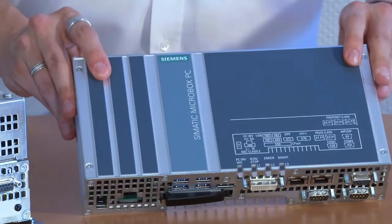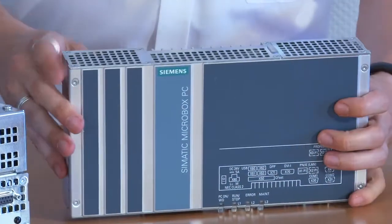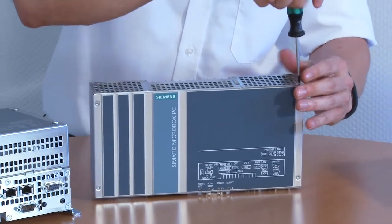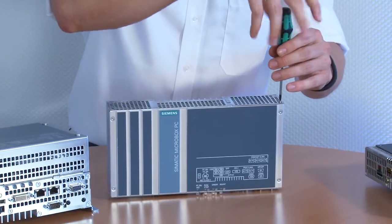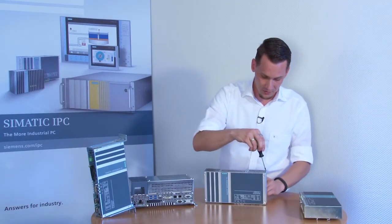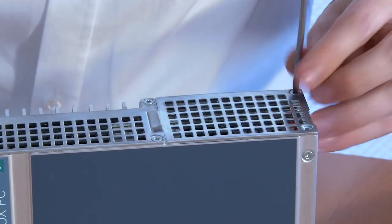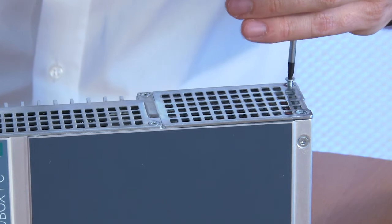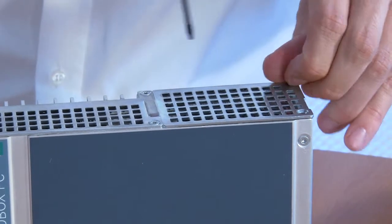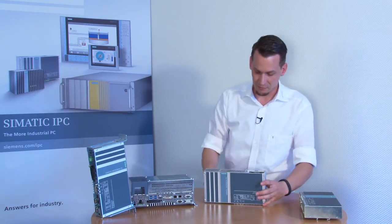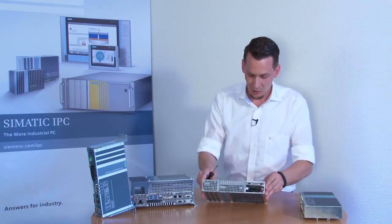In addition, you can also replace a configured internal mass storage just as quickly. To do so, I simply undo two screws on the side of the housing to remove the cover for the battery compartment and internal mass storage drive. This can be configured with an SSD or hard disk, or also an internal CFAST card.